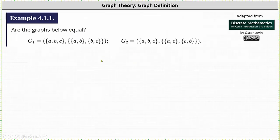Are the graphs below equal? The graph G1 has vertices {A, B, C} and edges {{A, B}, {B, C}}. Graph G2 has vertices {A, B, C} and edges {{A, C}, {C, B}}.